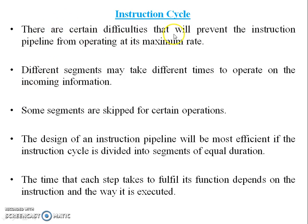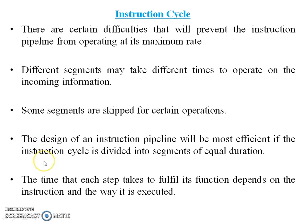There are certain difficulties that will prevent instruction pipelining from operating at its maximum rate. If some segments are faster and some are slower for a particular instruction, difficulties will arise. Different segments may take different times to operate on the incoming information, and some segments are skipped for certain operations — for example, if a multiplication instruction comes to the adder segment, that segment is skipped. The design of an instruction pipeline is most efficient if the instruction cycle is divided into segments of equal duration. The time each step takes depends on the instruction and the way it is executed.